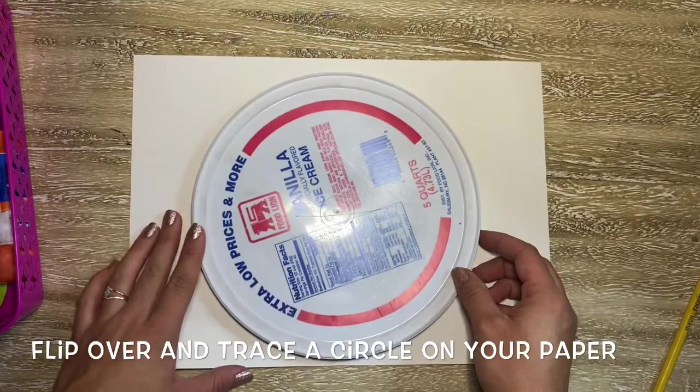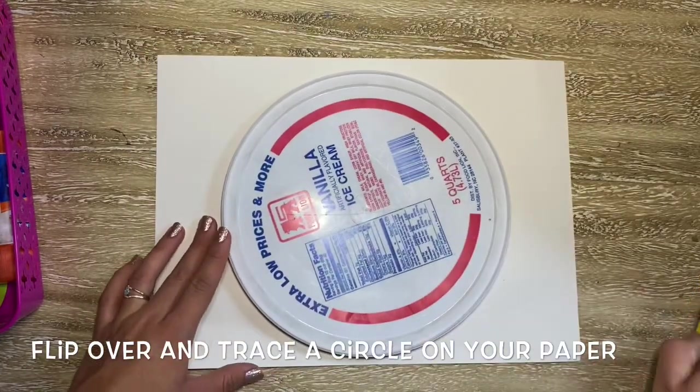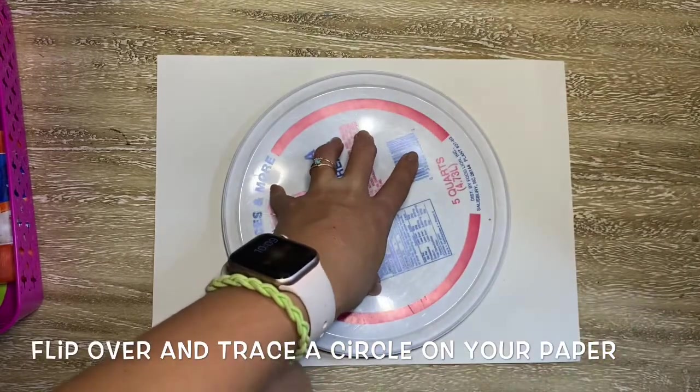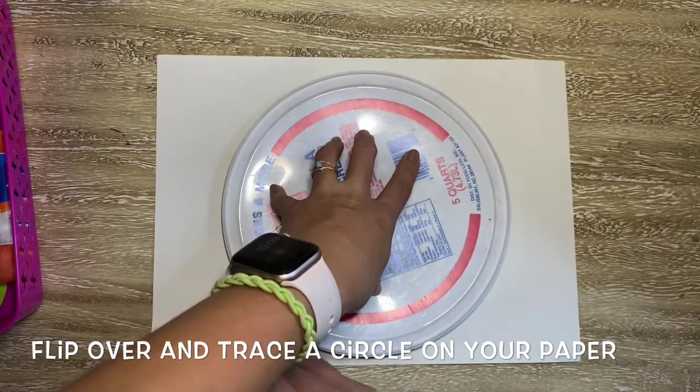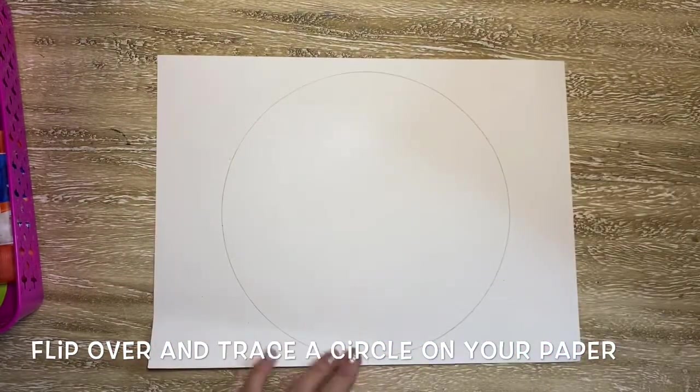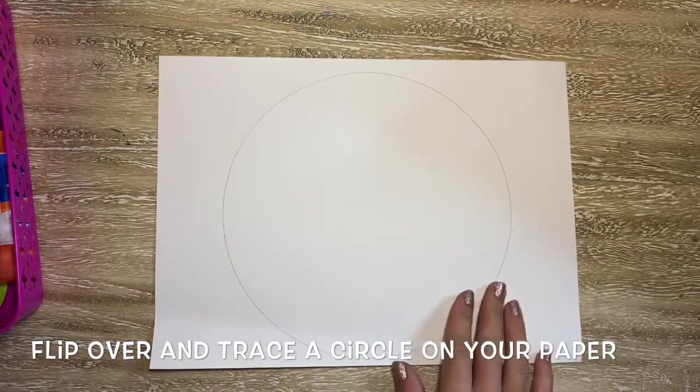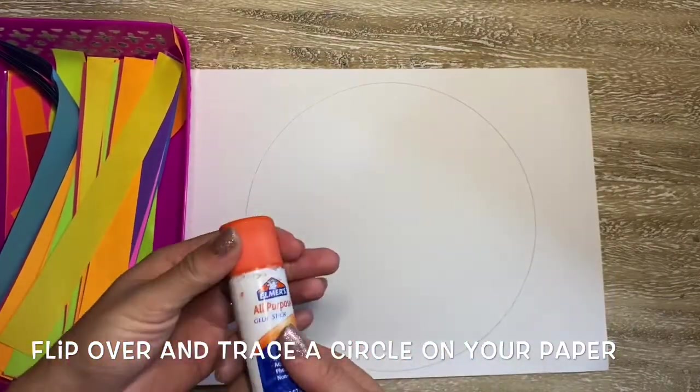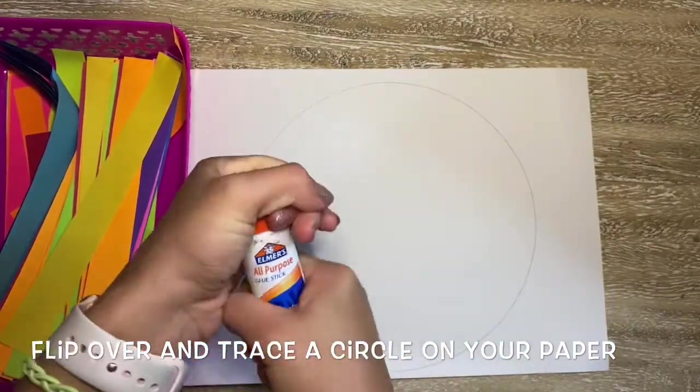If you don't have a lid you could be using a bowl or a plate. Anything that you can hold still with one hand while you use your pencil to trace around with the other hand. So now that I have done my pencil all the way around I can take off my circle and there we go, a perfect circle. It doesn't have to be perfect though, as long as you have that light circle outline that's gonna help you a lot.